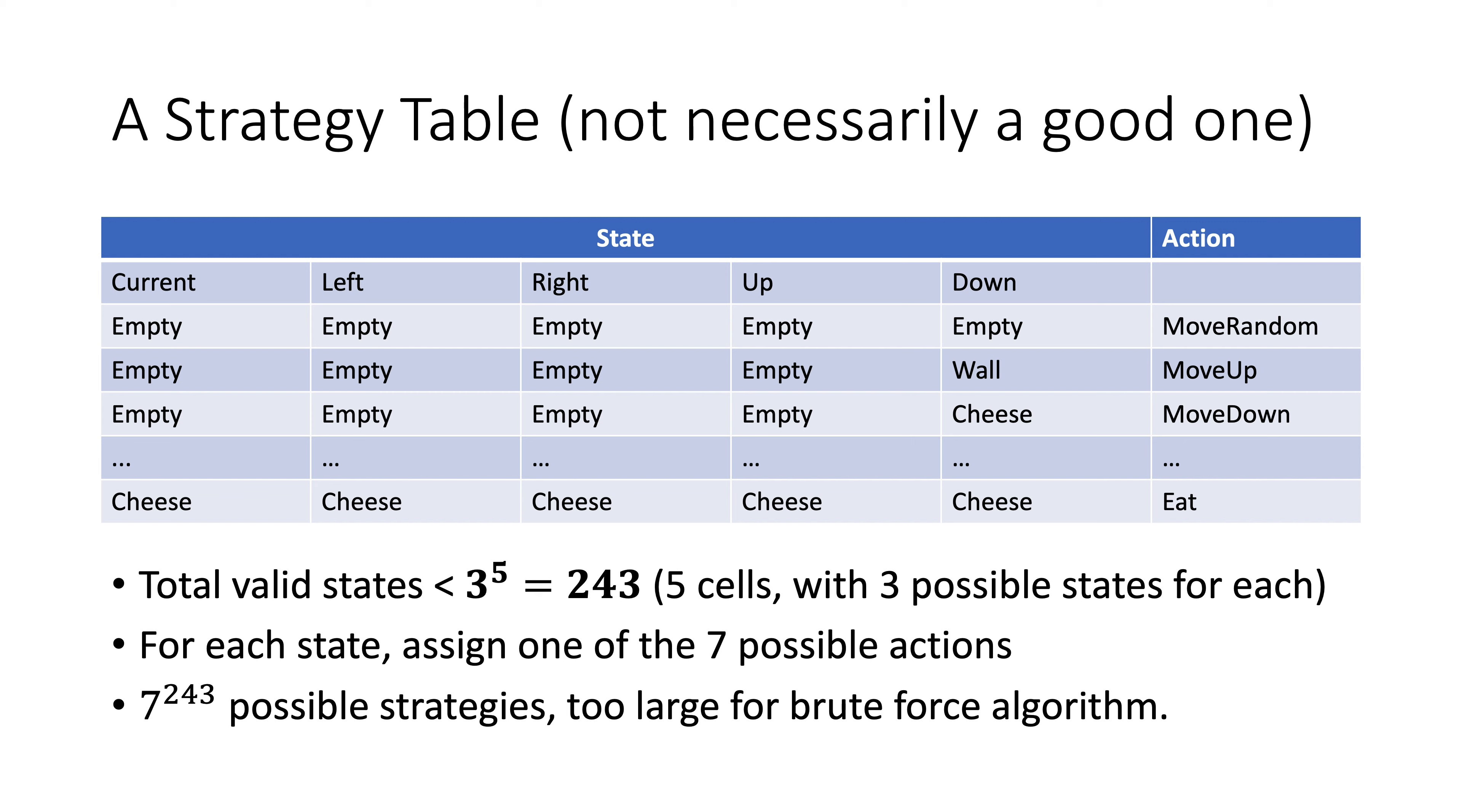Actually, 243 entries are still complicated for human. Instead, we can use some handcraft heuristics. For example, when there is a piece of cheese in the current cell, the action is eating it. Otherwise, if there are cheeses in one of the neighbors, go to that direction. If all empty, move to a random direction.